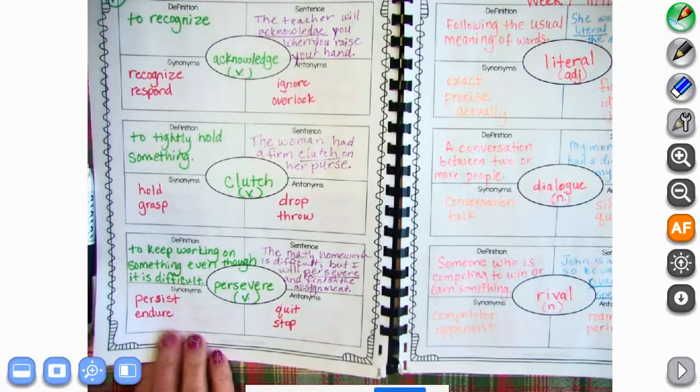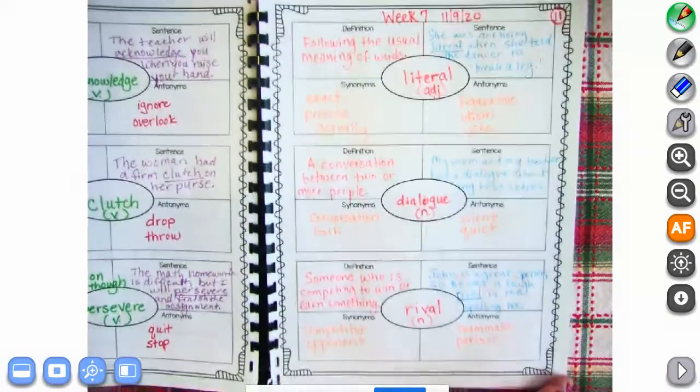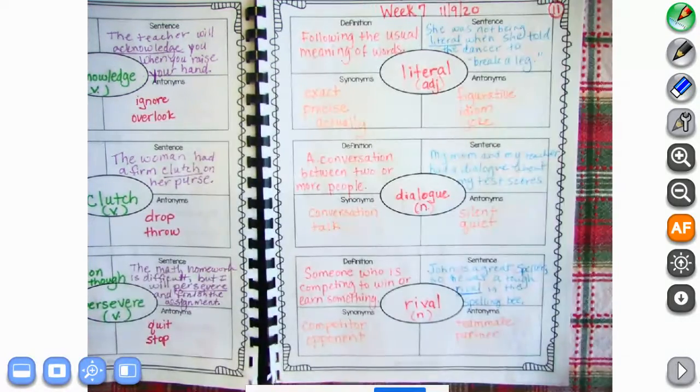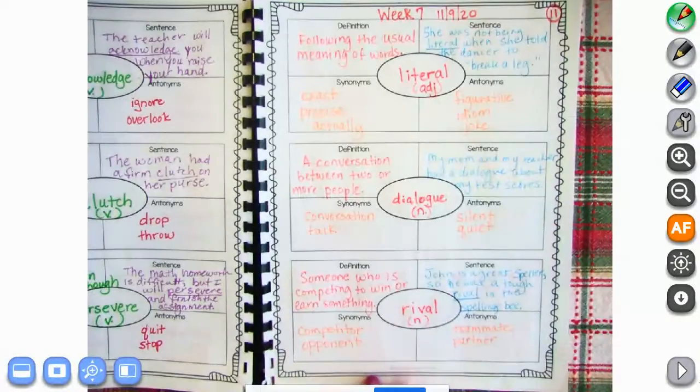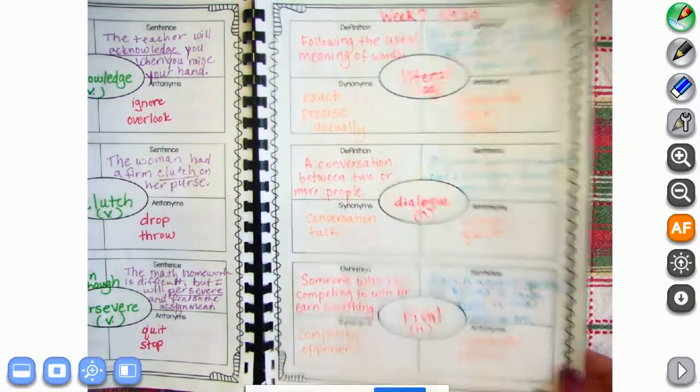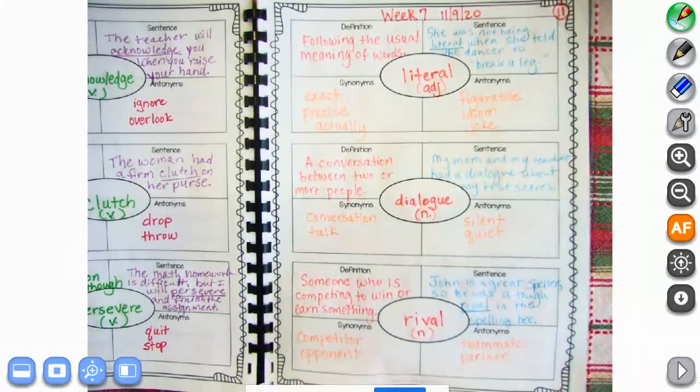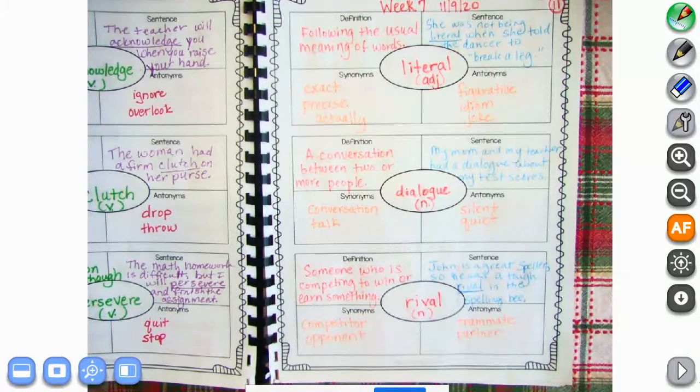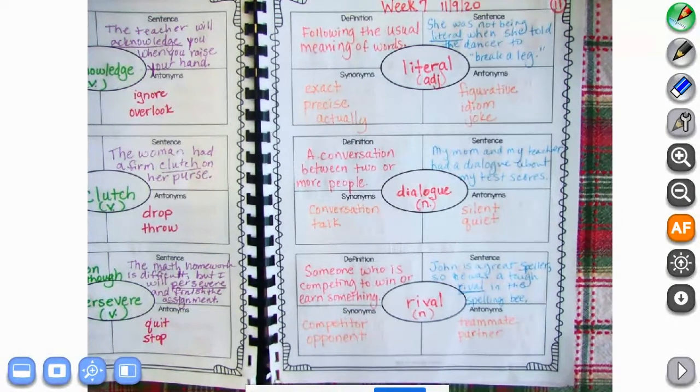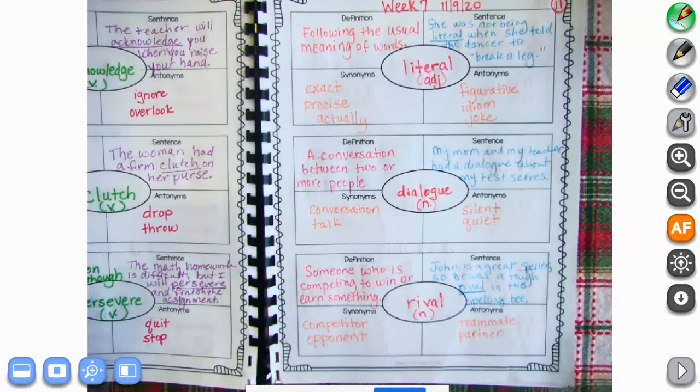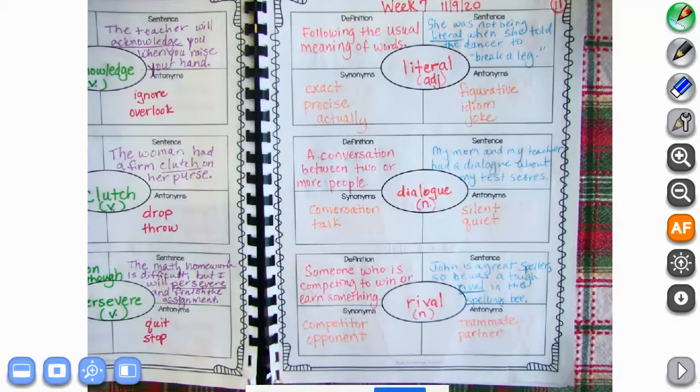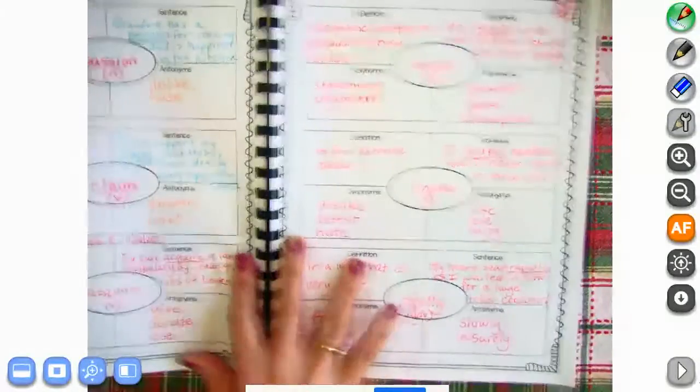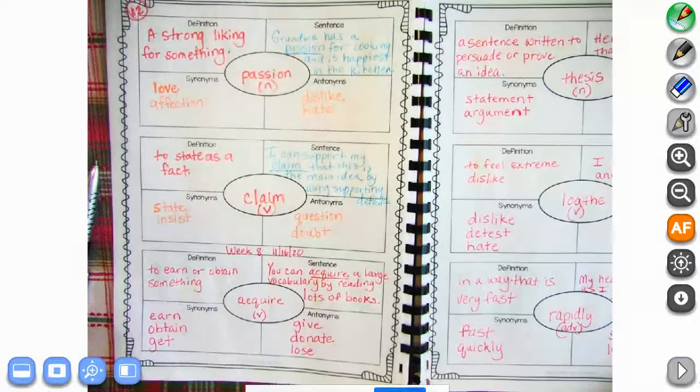Next we have page 11: literal, dialogue, and rival. Hard to see the words on this one here. Go ahead and press pause on that page. Page 12, we have passion, claim, and acquire.